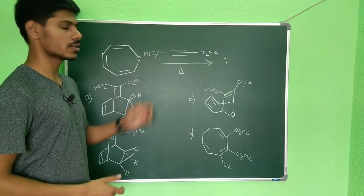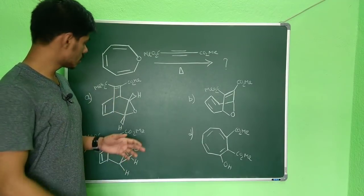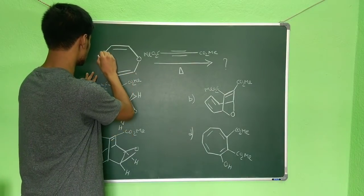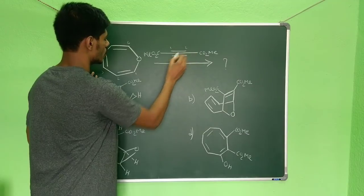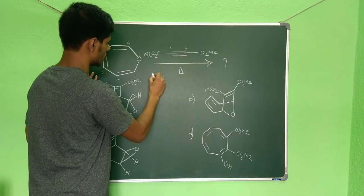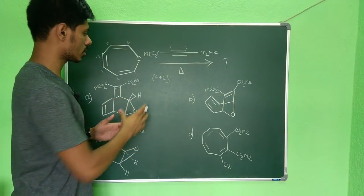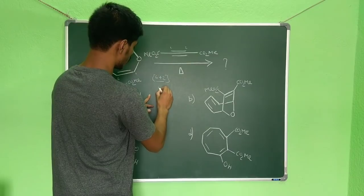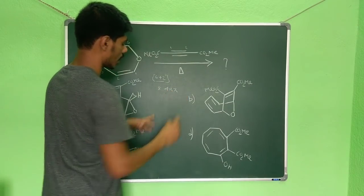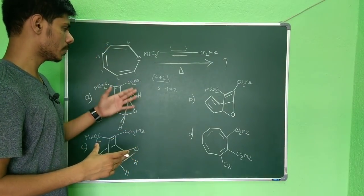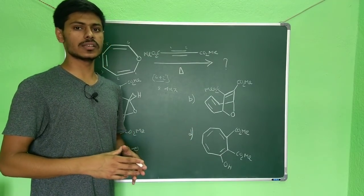Why is it wrong? Because here the cycloaddition reaction between these two partners is not favorable. You can see it is one, two, three, four, five, six and this is one, two. So it is a six plus two cycloaddition reaction, a total of eight electrons which is a 4n pi electron.